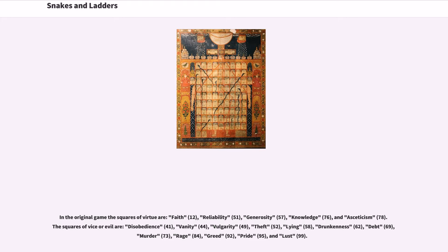The squares of vice or evil are: Disobedience, Vanity, Vulgarity, Theft, Lying, Drunkenness, Debt, Murder, Rage, Greed, Pride, and Lust.